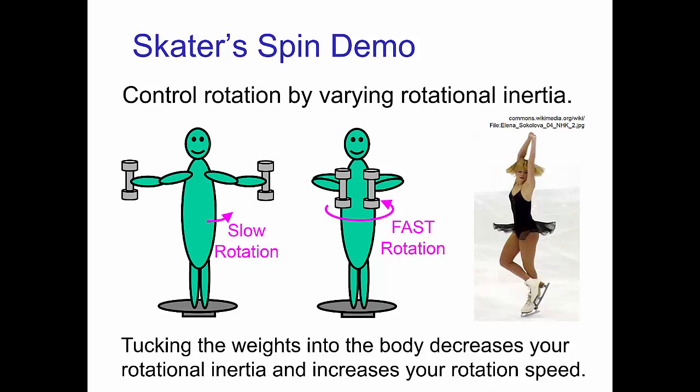For example, if you're standing on a rotating platform, you spin slower in a T-pose and faster with your arms pulled in.